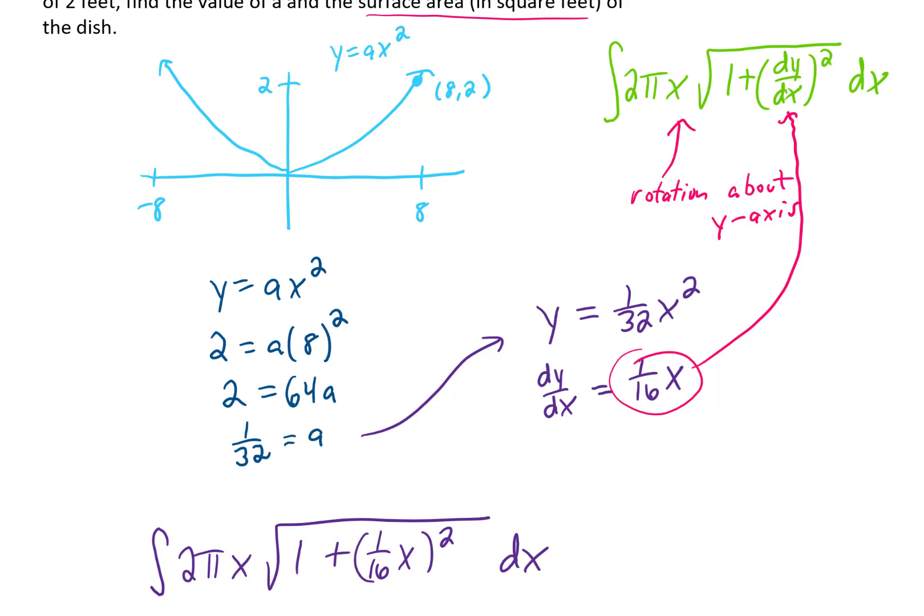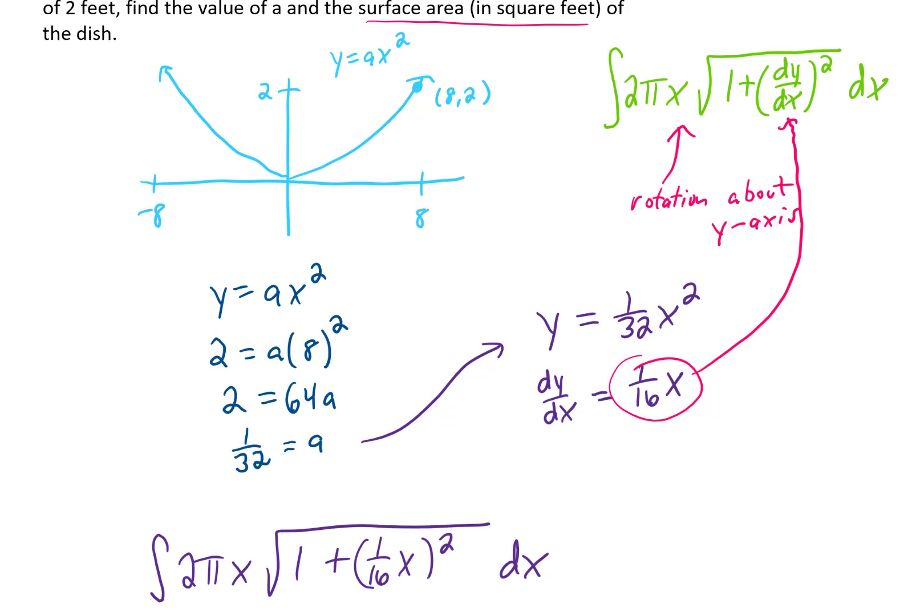Now the question is, what are the limits on x? In other words, what x values on this function do we need to rotate about the y-axis to give us this parabolic dish? If we rotate from x equals 0 to x equals 8 about the y-axis, that gives us the entire parabolic satellite dish. So we only need to integrate between 0 and 8.